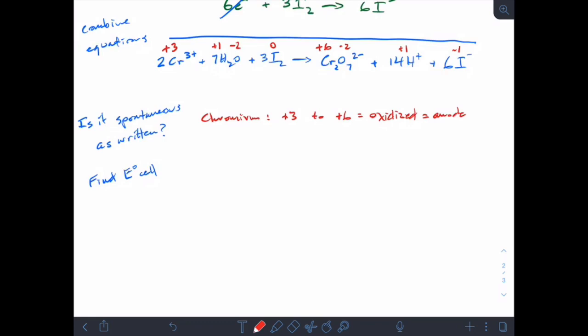And then the iodine, we see that it goes from a zero to a minus one, which means that it's reduced, and it's the cathode. You can remember that reduced and cathode both begin with consonants, or you can remember red cat in order to keep those together.